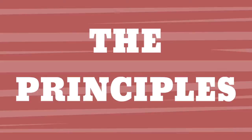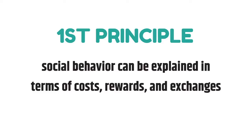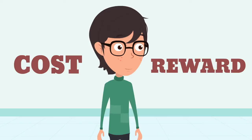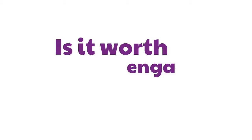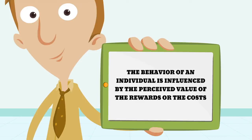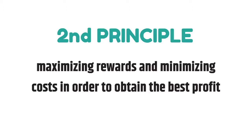Now that we have defined and explained the key elements of the theory, let's dive into the theory's principles. The first principle is based on the assumption that social behavior can be explained in terms of costs, rewards, and exchanges. When considering any social interaction, we look at the cost as well as the rewards we might receive. We look at the exchange of these costs and rewards and determine whether the interaction is worth engaging in. The behavior of an individual is influenced by the perceived value of the rewards or costs, and the exchange can also be used to predict behavior.